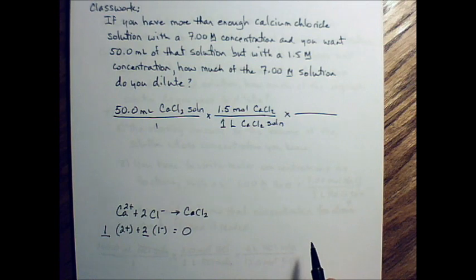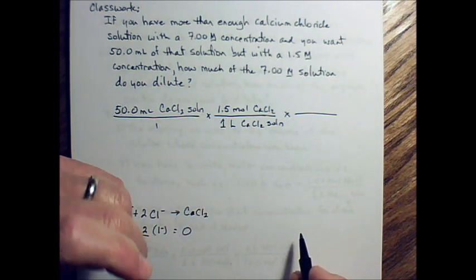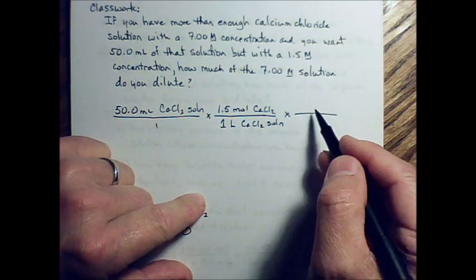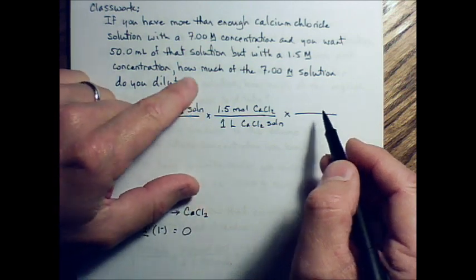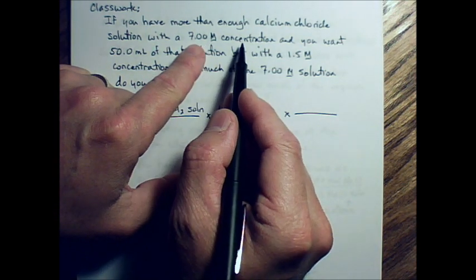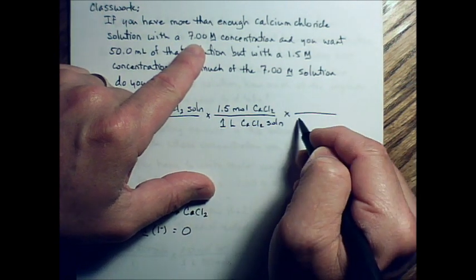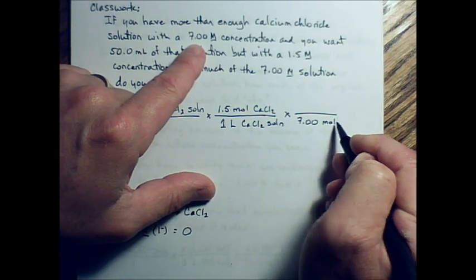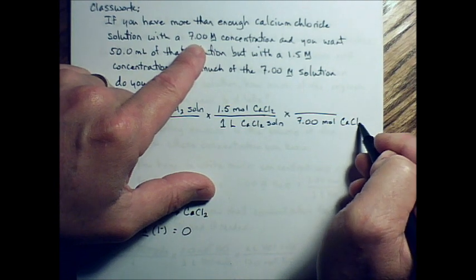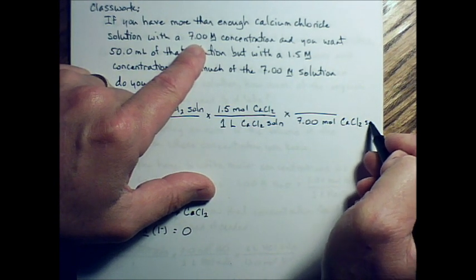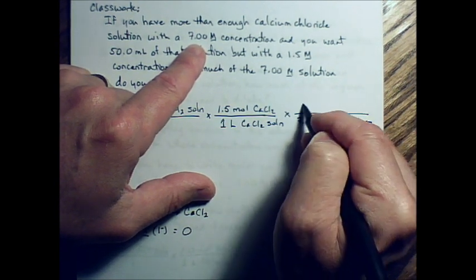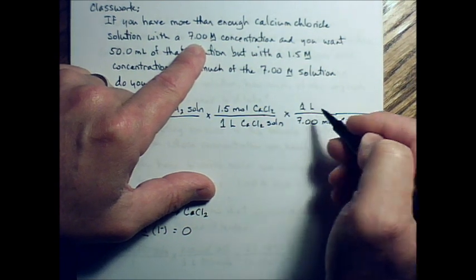And then we're going to take the concentration of the original solution and flip it. So with a 7 molar concentration, we don't want 7 moles on the top, we want to flip it. 7.00 moles of the calcium chloride goes in the bottom, and the 1 liter of calcium chloride solution goes in the top.